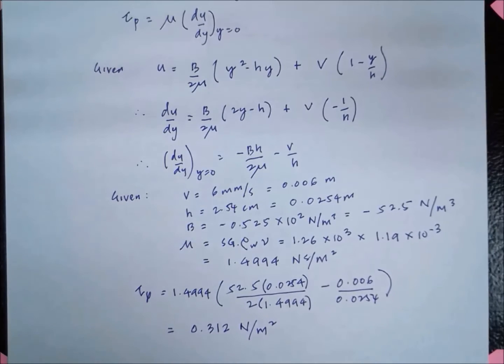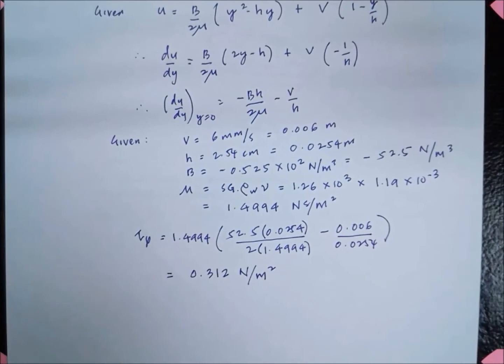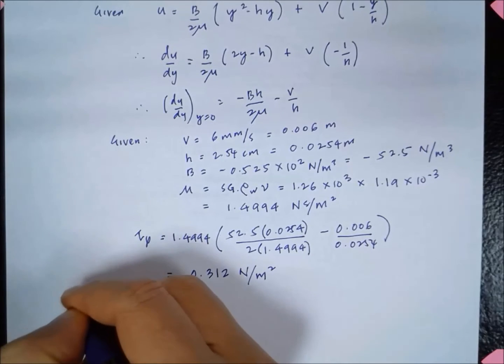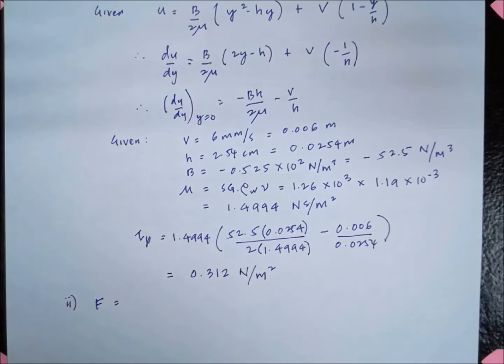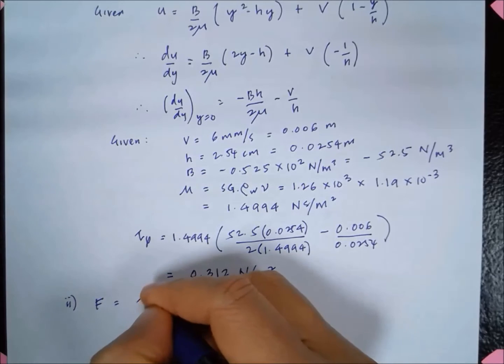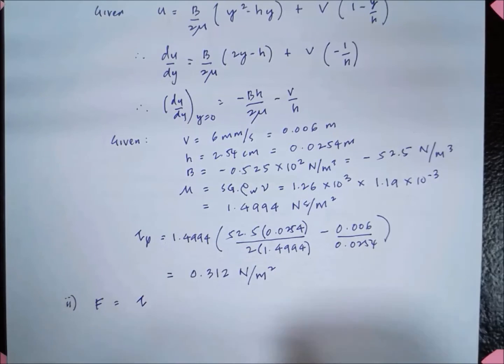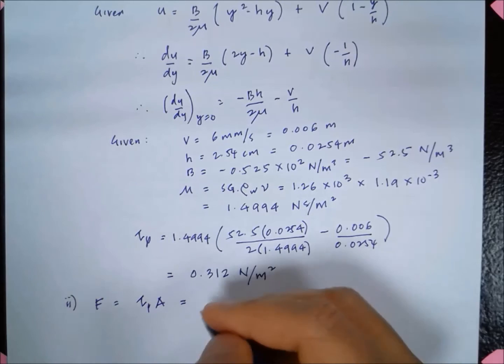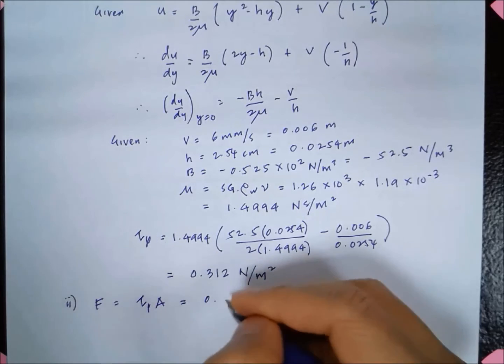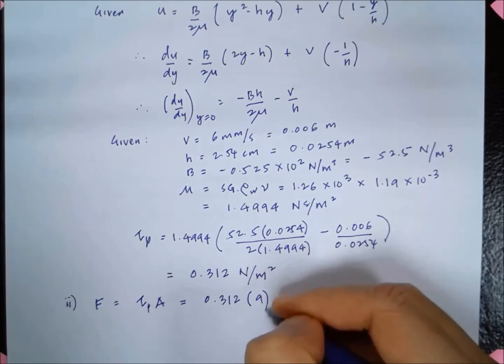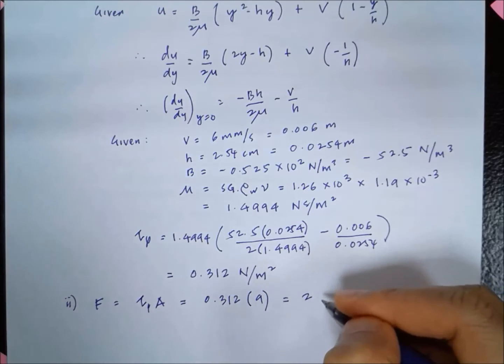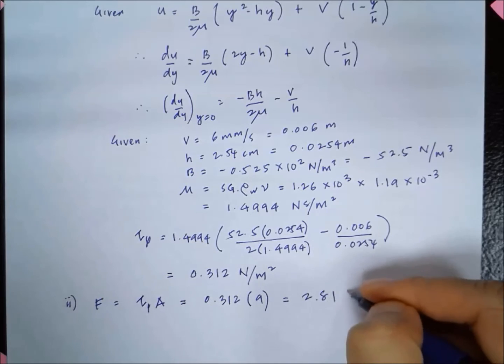The second part of the question is finding the force. The force, as we know by definition, shear stress is force over area. So to get force, we take the shear stress at the plate multiplied by the area. So it is 0.312 multiplied by 9, which gives 2.81 newton.